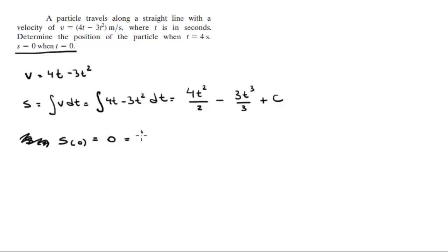So you know that 4t² over 2 minus 3t³ over 3 plus c is 0 when t is equal to 0. So this is 0, so as you can see, c is equal to 0.